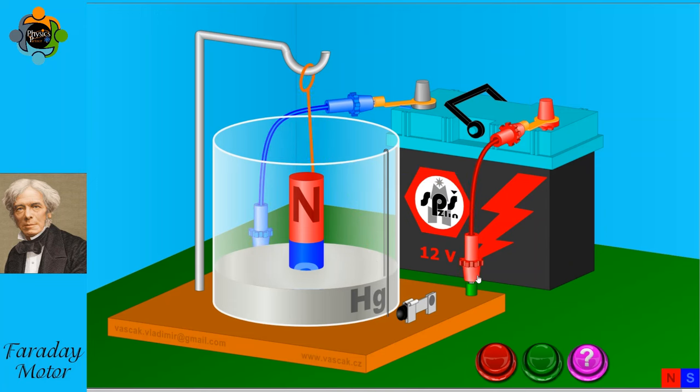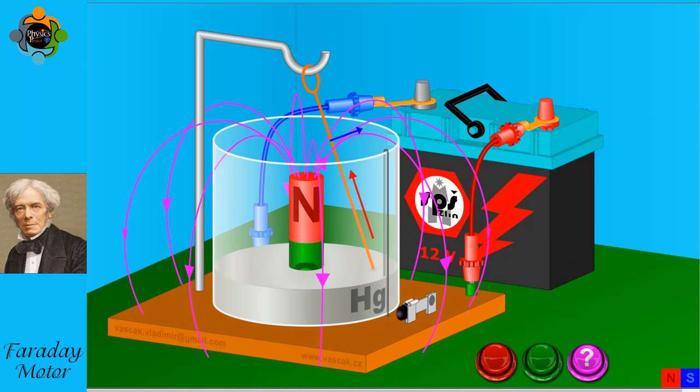This phenomenon was the one discovered by Ørsted. The magnetic field that surrounds the wire then interacts with a second force. This force is also a magnetic field, but this time is generated from the permanent magnet in the center of the dish.